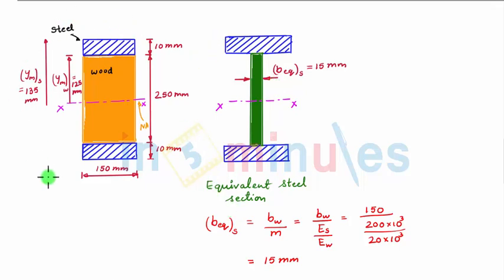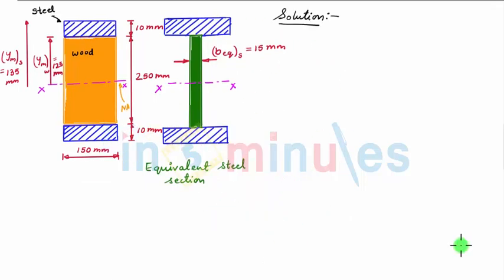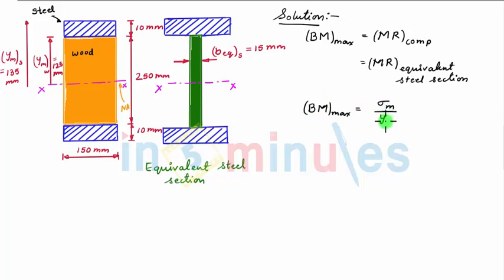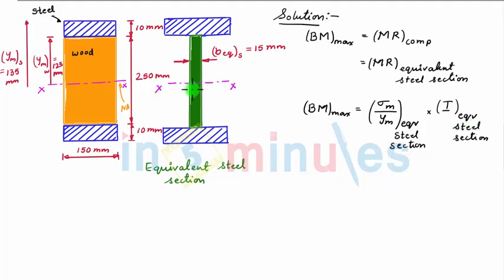Now let's find the moment of resistance of this composite section, which will be equal to the moment of resistance of the equivalent steel section. Writing the bending equation for the composite beam: the maximum bending moment equals the moment of resistance of the composite beam, which equals the moment of resistance of the equivalent steel section. We write this as M_max = (sigma_max / Ymax) × I, where I is the moment of inertia of the equivalent steel section about its centroidal (neutral) axis.